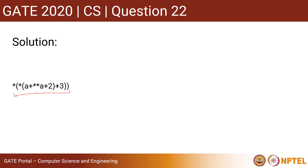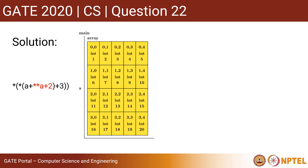This is the expression whose value we have to calculate to get the output of the program. Let us look at this part of the expression first. Here is the pictorial representation of the array given in the question. This is a 2D array of size 4×5, and each cell contains a value. The cell positions are: row 0 column 0, row 0 column 1, and so on.